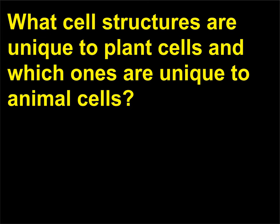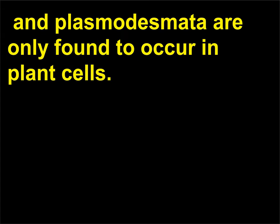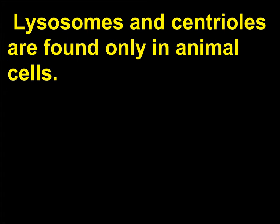What cell structures are unique to plant cells and which ones are unique to animal cells? The chloroplast, central vacuole, tonoplast, cell wall, and plasmodesmata are only found to occur in plant cells. Lysosomes and centrioles are found only in animal cells.